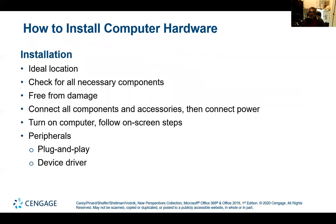How to install computer hardware: as far as installation goes, you need an ideal location. Check for all necessary components and make sure everything is there and free from damage. Connect all components and accessories, then connect the power and turn on your computer. Follow the on-screen steps. Most devices these days come as plug and play. If they do require specialized software, it will typically come with the device, usually on a DVD or CD.